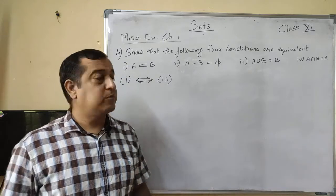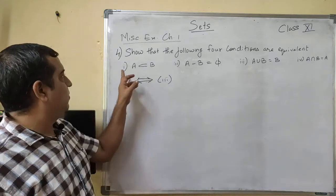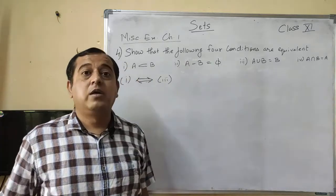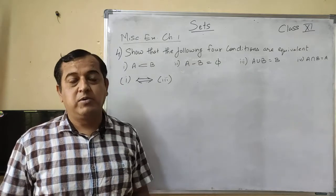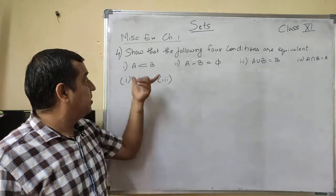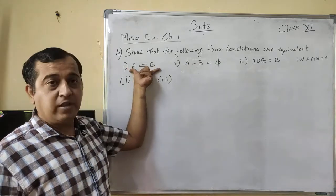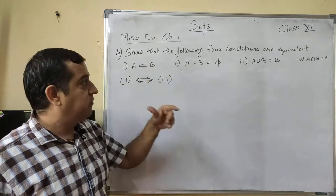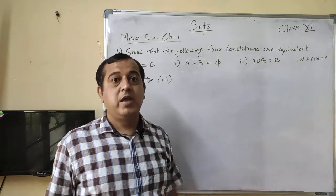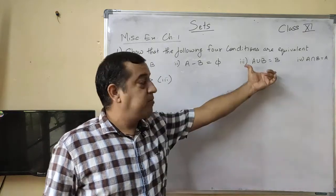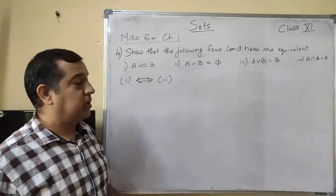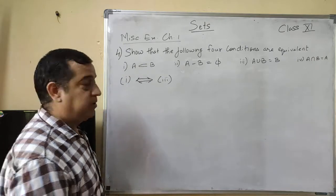Proceeding to the next part. In this case, we have to prove that the first and third conditions are equivalent. This means: A ⊆ B implies A ∪ B = B, and A ∪ B = B implies A ⊆ B.